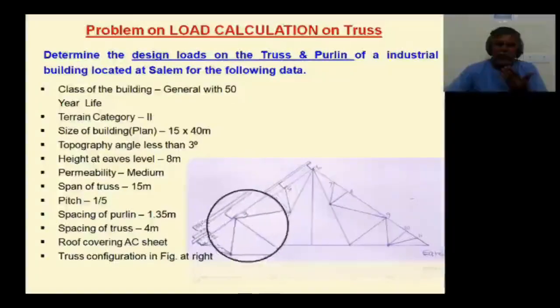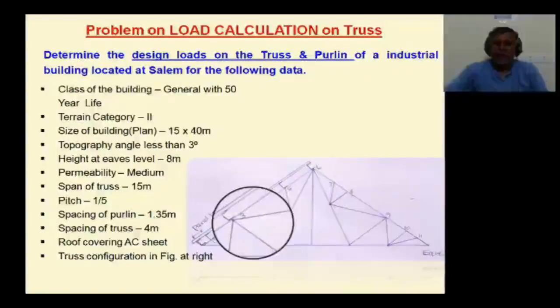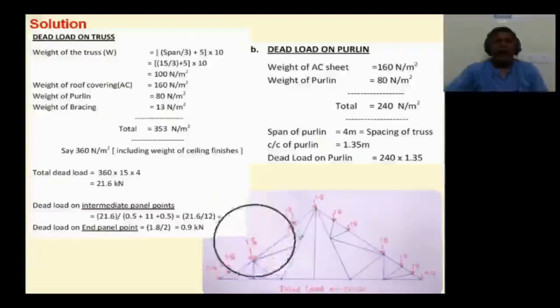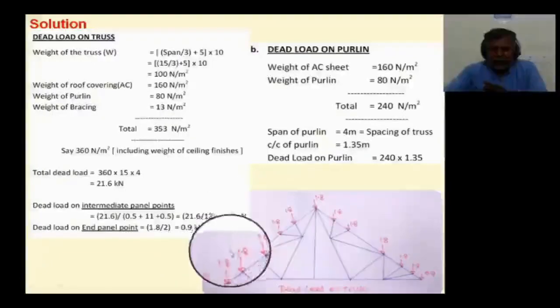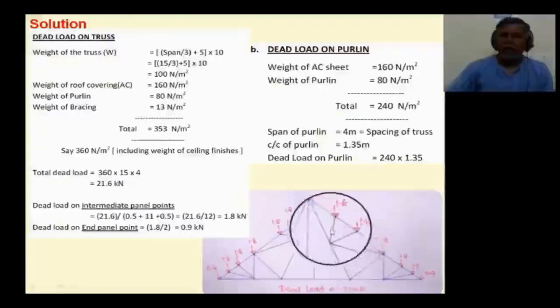After calculating the forces, we have to form load combinations to find the worst load combination. For example, dead load and live load are gravity loads that always act in vertically downward directions. Dead load on the truss acts vertically downward.